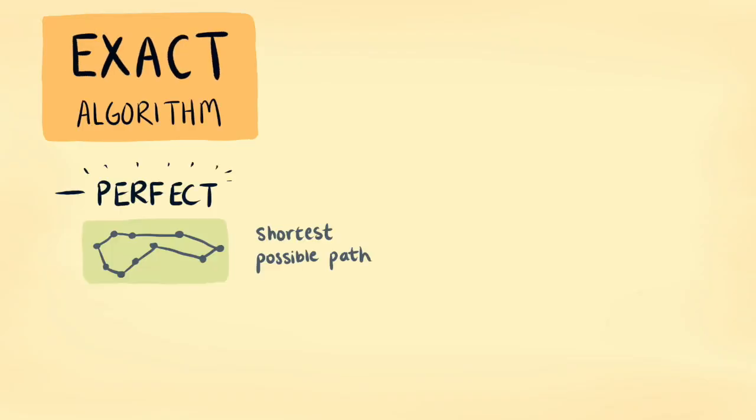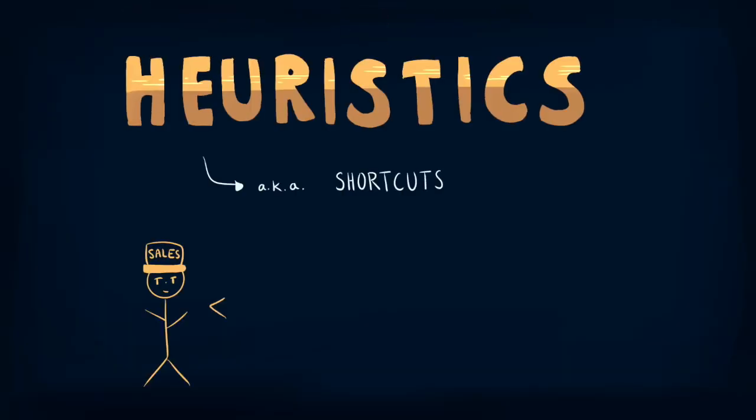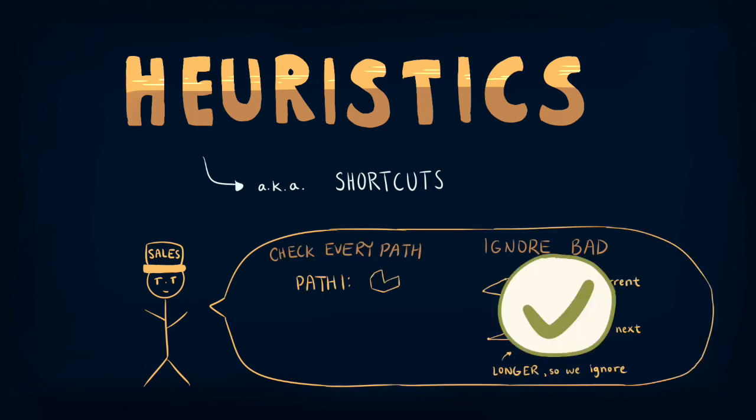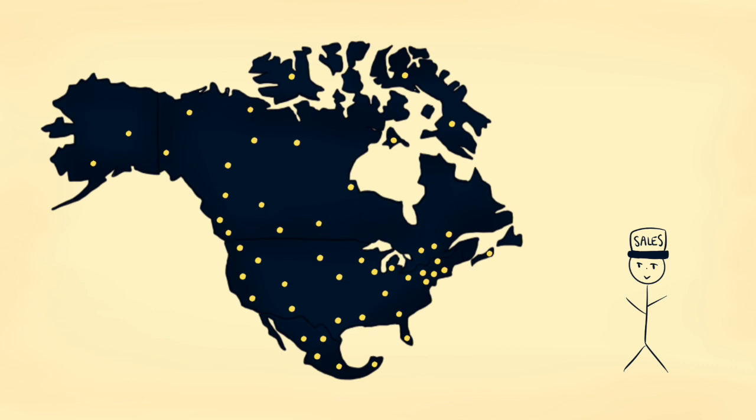Well, do we always need perfect solutions? In practice, often we just need good enough solutions, but quickly. So we use heuristics. Heuristics find approximate solutions by ignoring bad paths right off the bat instead of checking each one. Humans already use heuristics naturally. For these cities, our intuition tells us that the shortest route should be close to this.